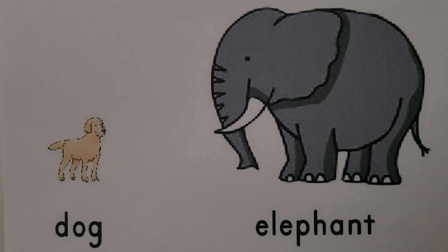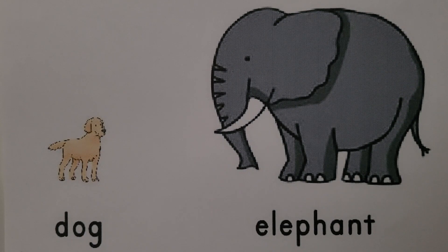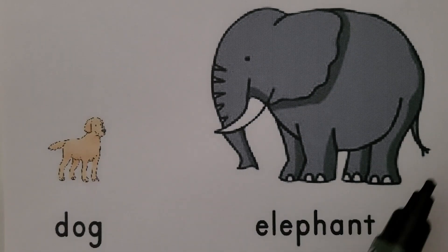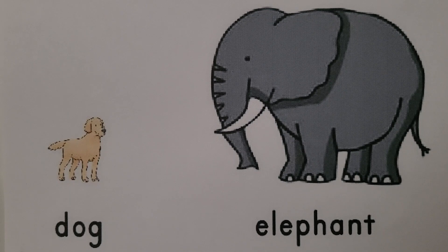Here we have a dog and an elephant. How are they alike? What is the same about a dog and an elephant? Well, both are animals — that's the same. Both have four legs. They both have a tail, they both have eyes, they both have ears, and they both have a mouth. So those are the things that are alike about dogs and elephants.